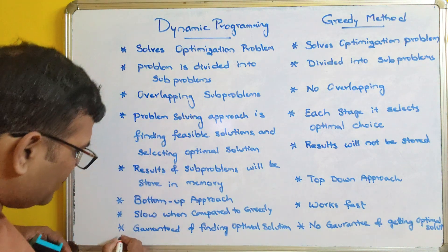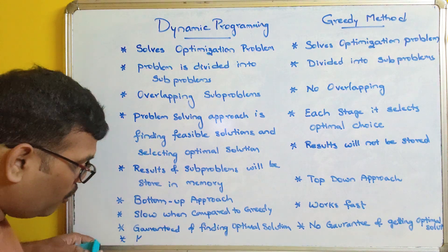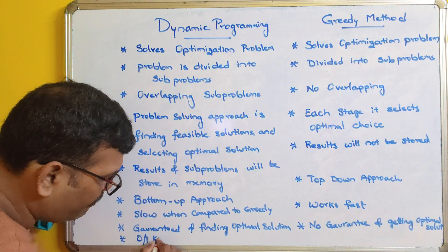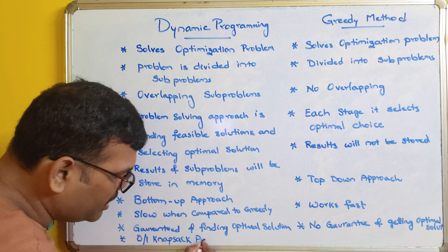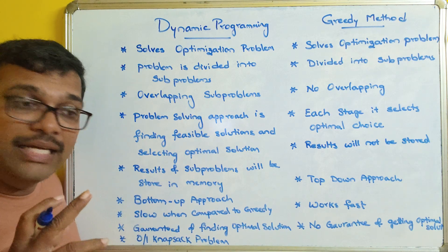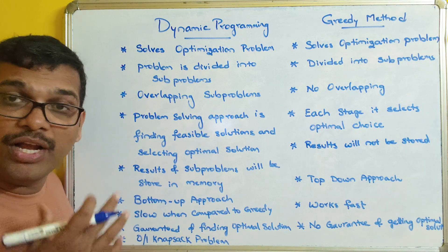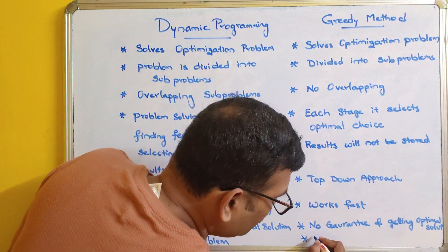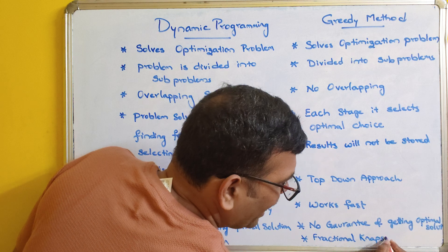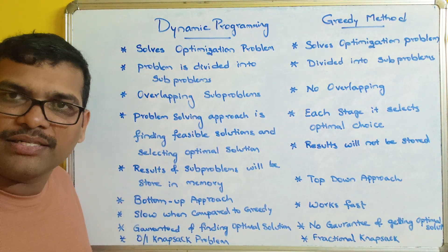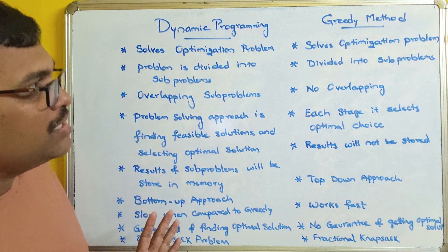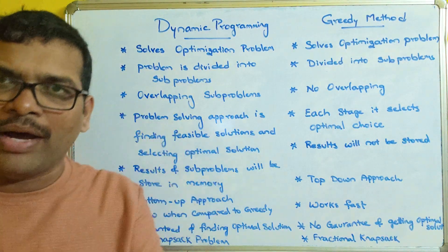One application of dynamic programming is the 0/1 knapsack problem, which involves non-divisible products that cannot be divided. The greedy method can be applied to the fractional knapsack problem, which deals with divisible products. These are the major differences between dynamic programming and greedy method.